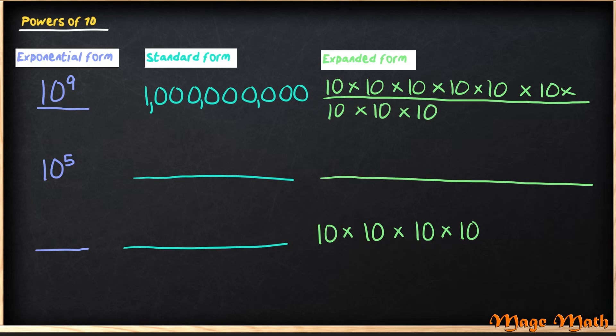The next one, I see that it's 10 to the 5th power and I'm missing standard form. You should get 100,000 and write the expanded form. Check to see if you got the last one correct. You did awesome!